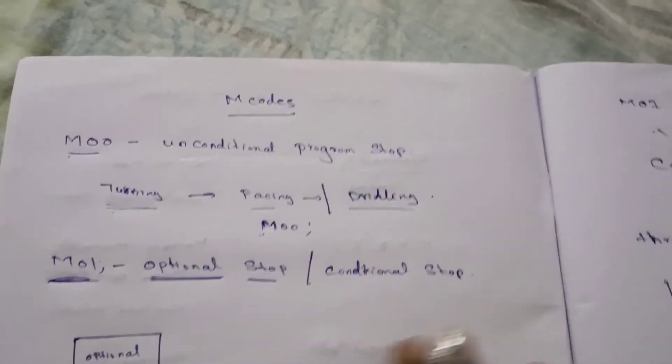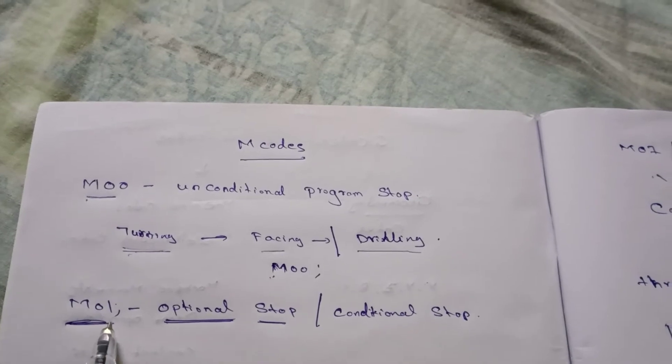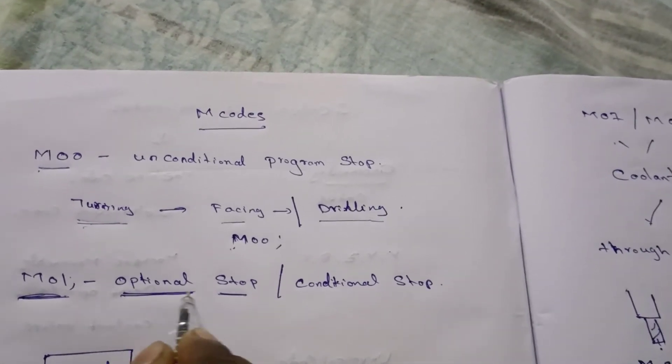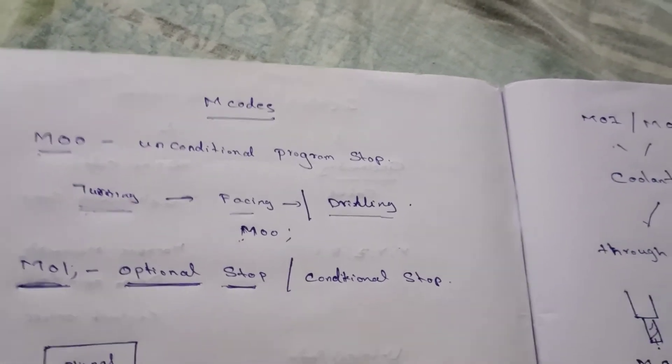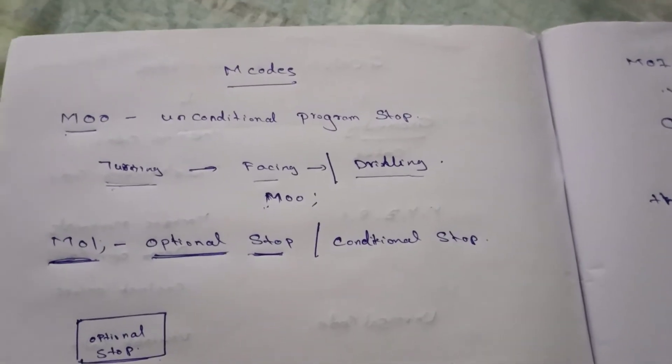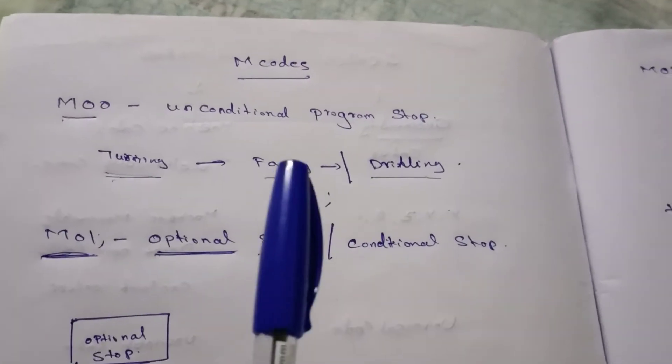And next, M01. It means optional stop. It refers to optional. It means when you need it, you can engage it.